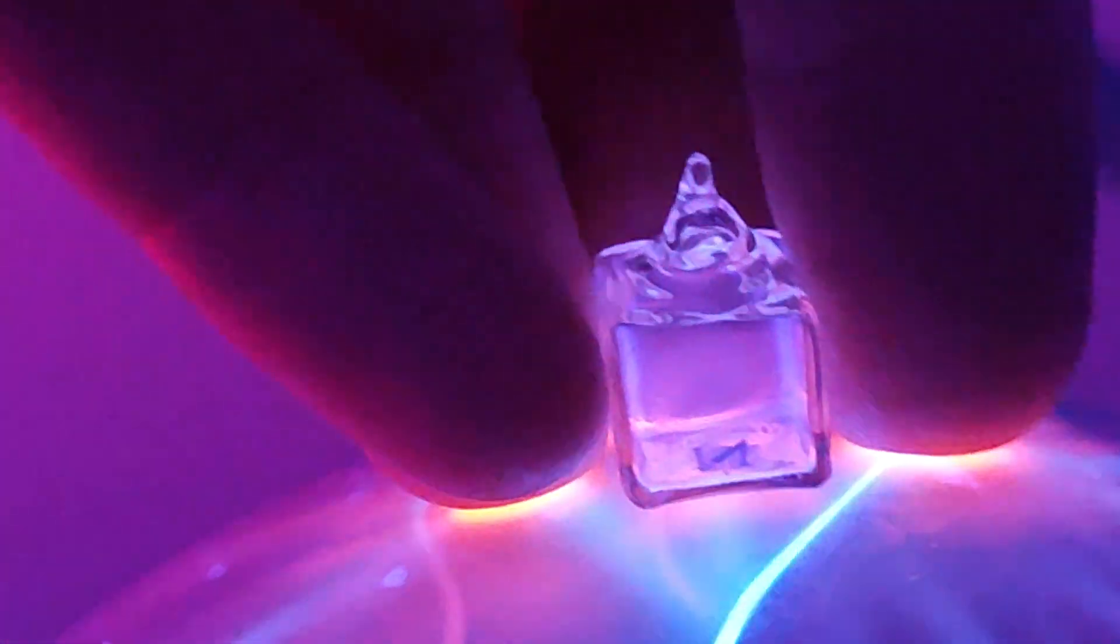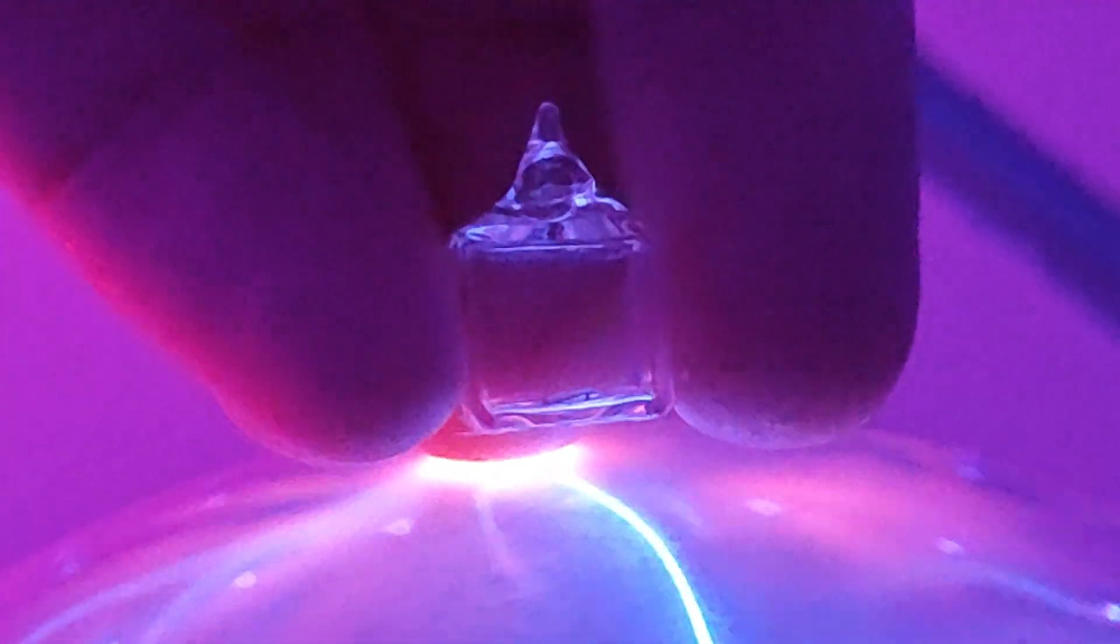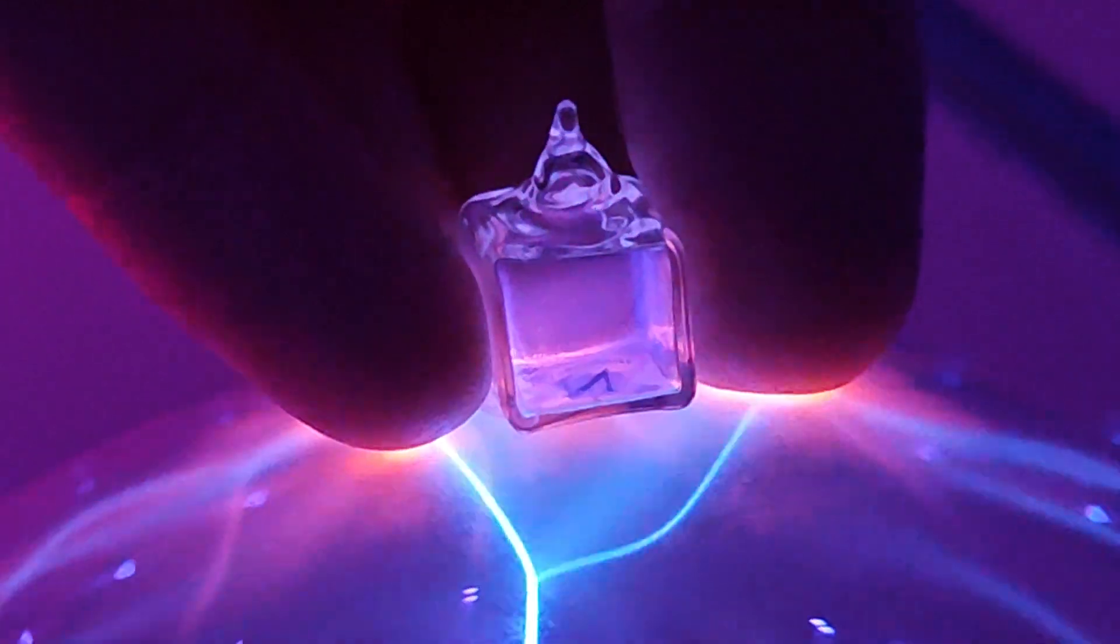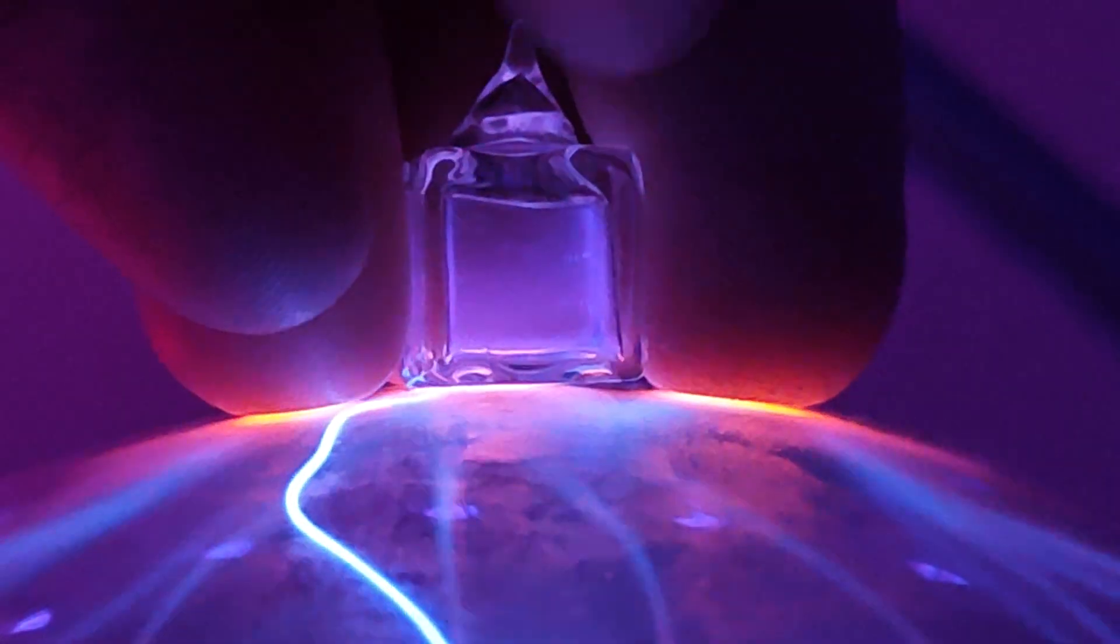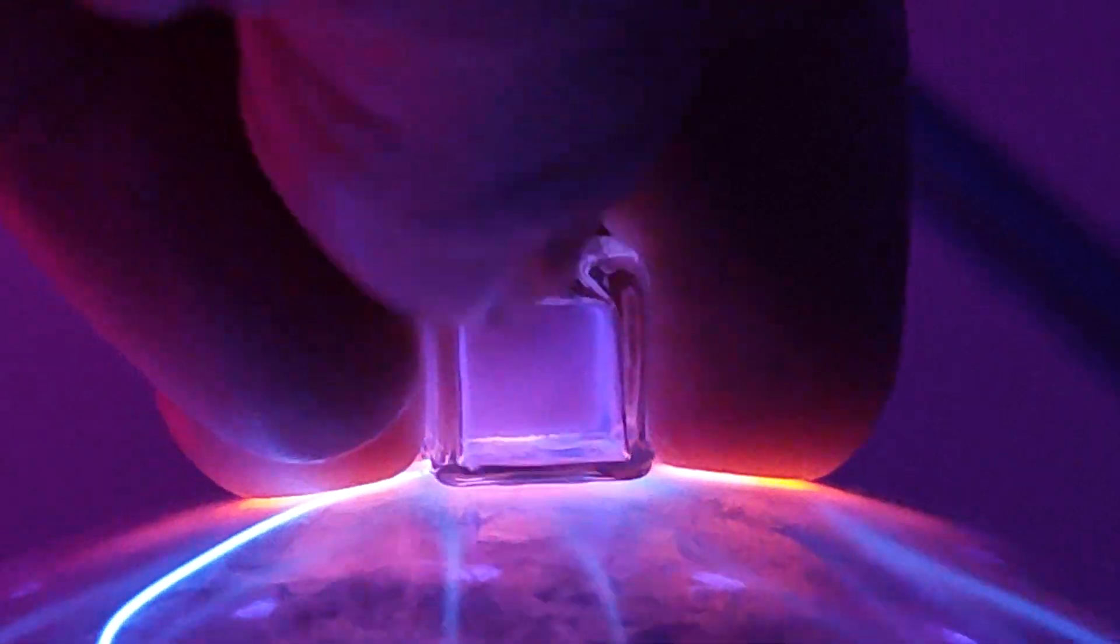We've then got nitrogen and oxygen so nitrogen is this one. You can see the color and oxygen is this little beauty. Okay so all the gases discharge a plasma when you put it in touch with an electric field such as this one. We've got a few more though. Not the obvious one. So this one here is chlorine.